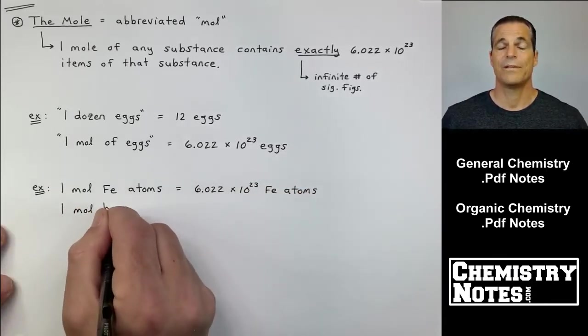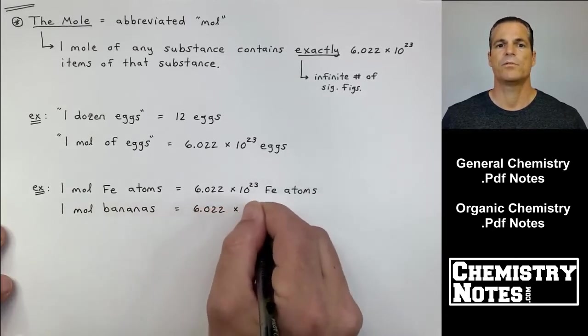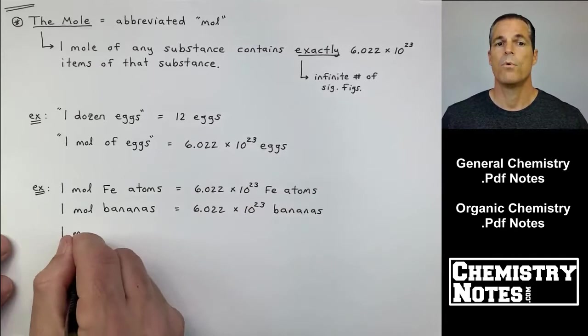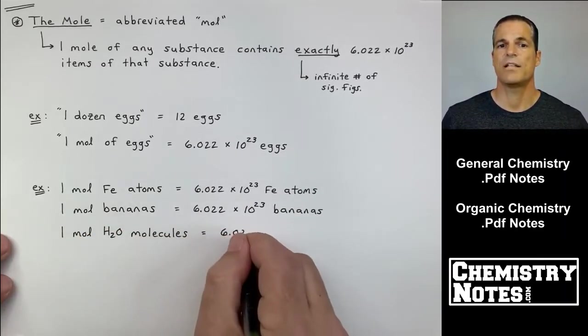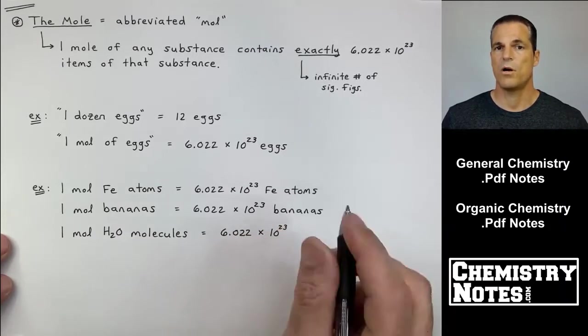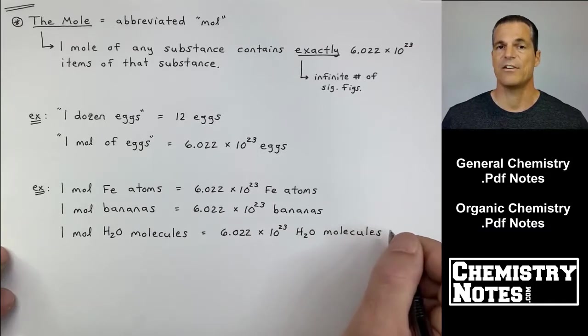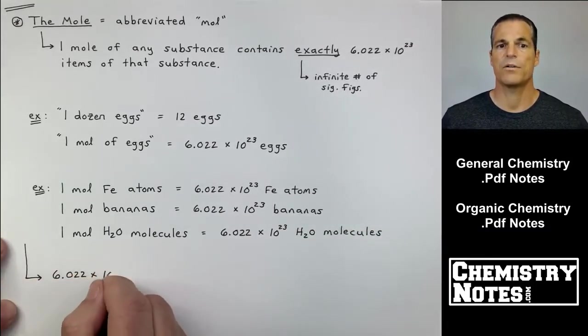If I have one mole of bananas, you guessed it, 6.022 times 10 to the 23rd bananas. One mole of water molecules, 6.022 times 10 to the 23rd water molecules. So in the first example, those are atoms. In the third example, water, those were molecules.